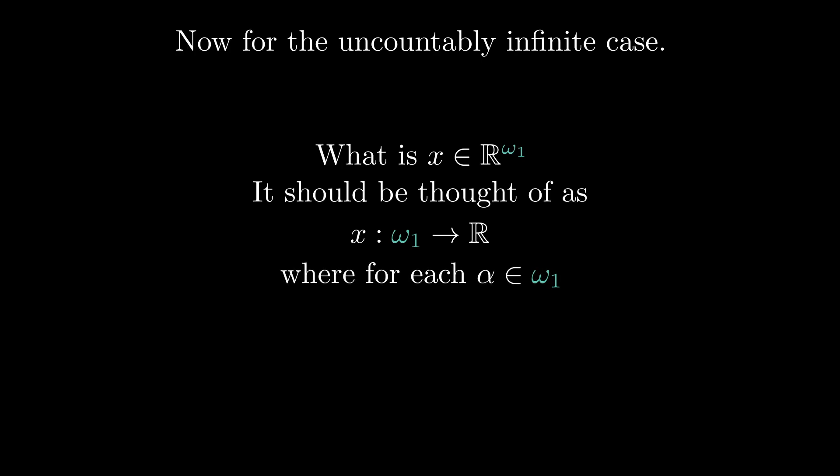Finally, let's consider the uncountably infinite case. Now the tuple idea is out, but the function idea is in. In other words, a typical element of R omega 1, that should just be a function x. And x is some well-defined way to pick out an uncountable amount of real numbers.